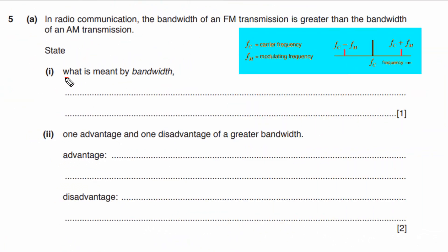First of all, let's try to understand what is meant by bandwidth. Bandwidth simply is the range of frequencies of a signal, or we can say it is the range of frequencies occupied by a modulated waveform. Let me explain this with the help of amplitude modulation.